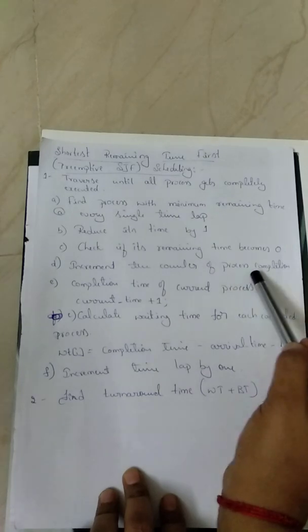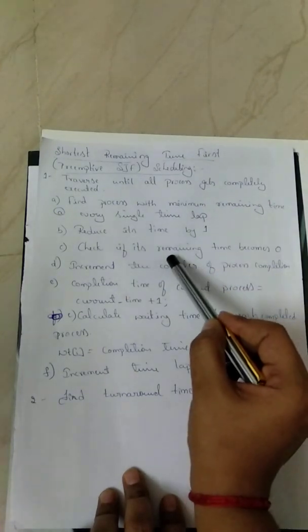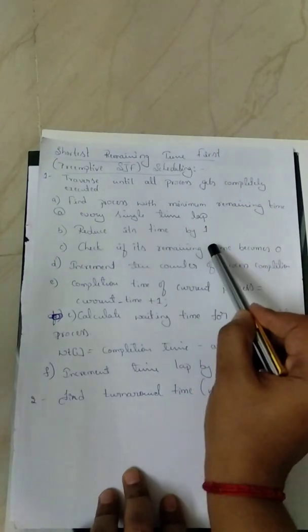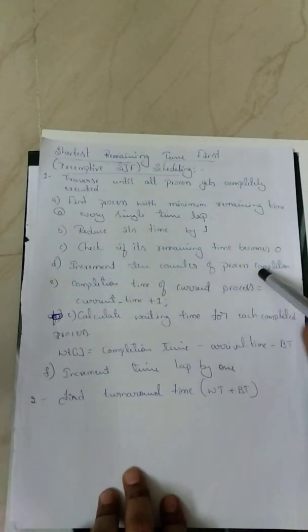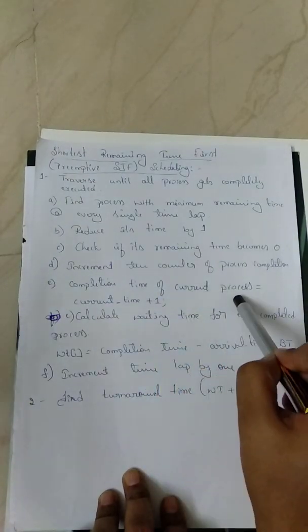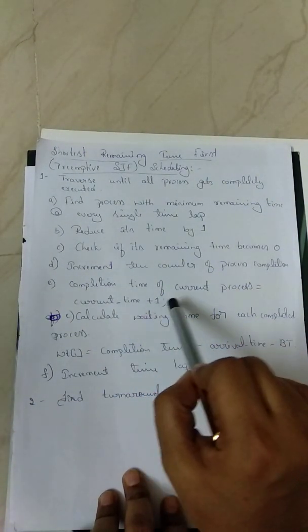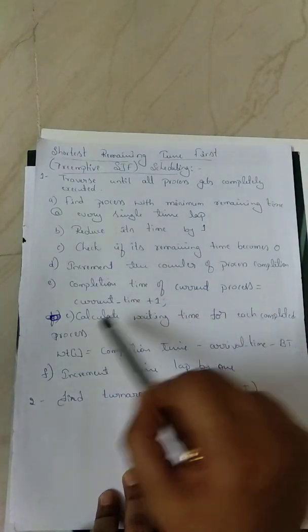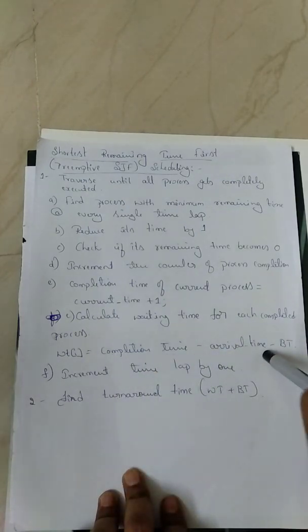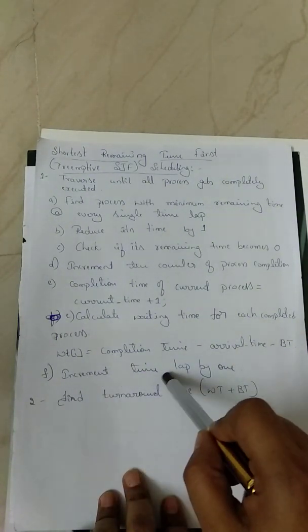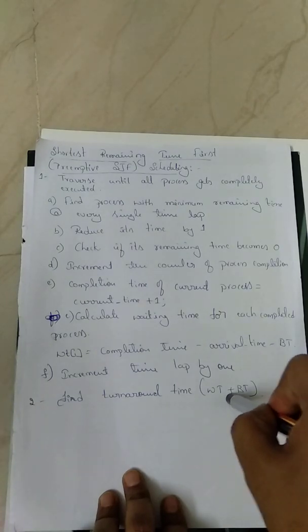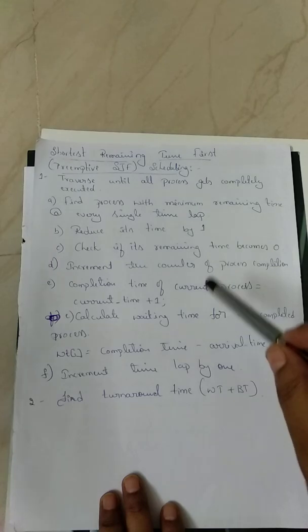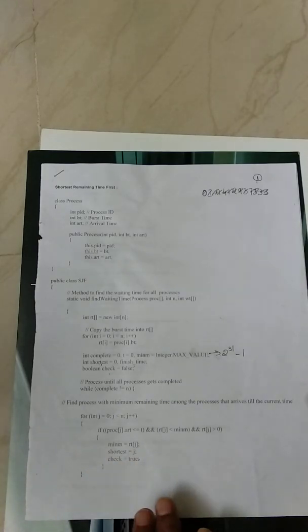When remaining time reaches 0, increment the counter for process completion. The completion time of the current process equals current time plus 1. Then calculate the waiting time for each completed process using the formula. After that, increment the time step by 1. Once we have the waiting time, we can find turnaround time as waiting time plus burst time. Following this design, we'll now look at the code.